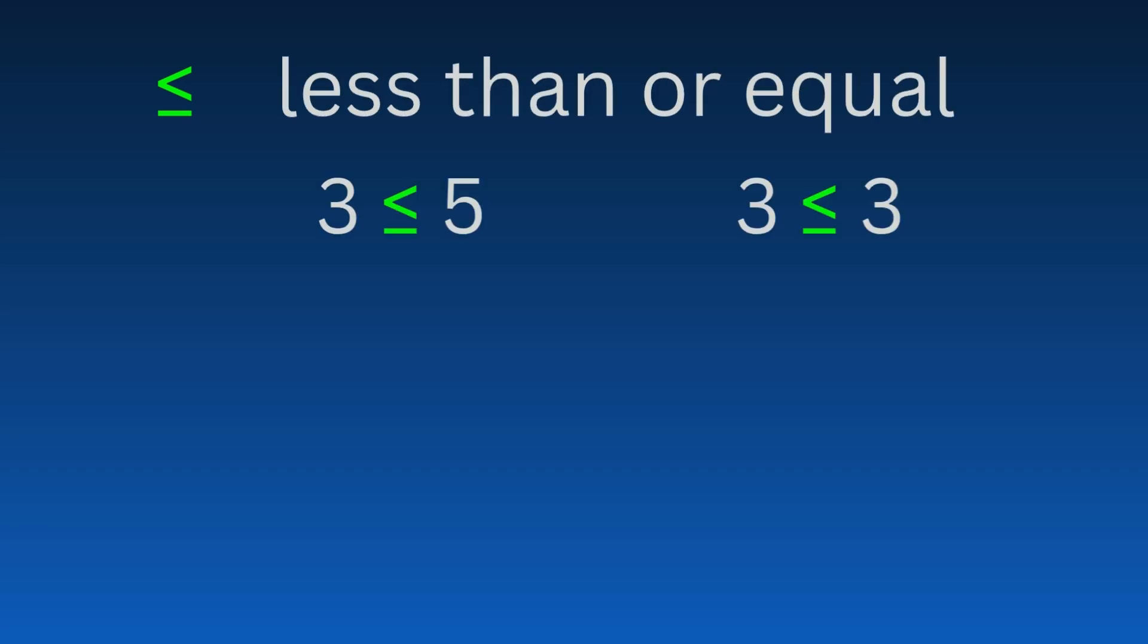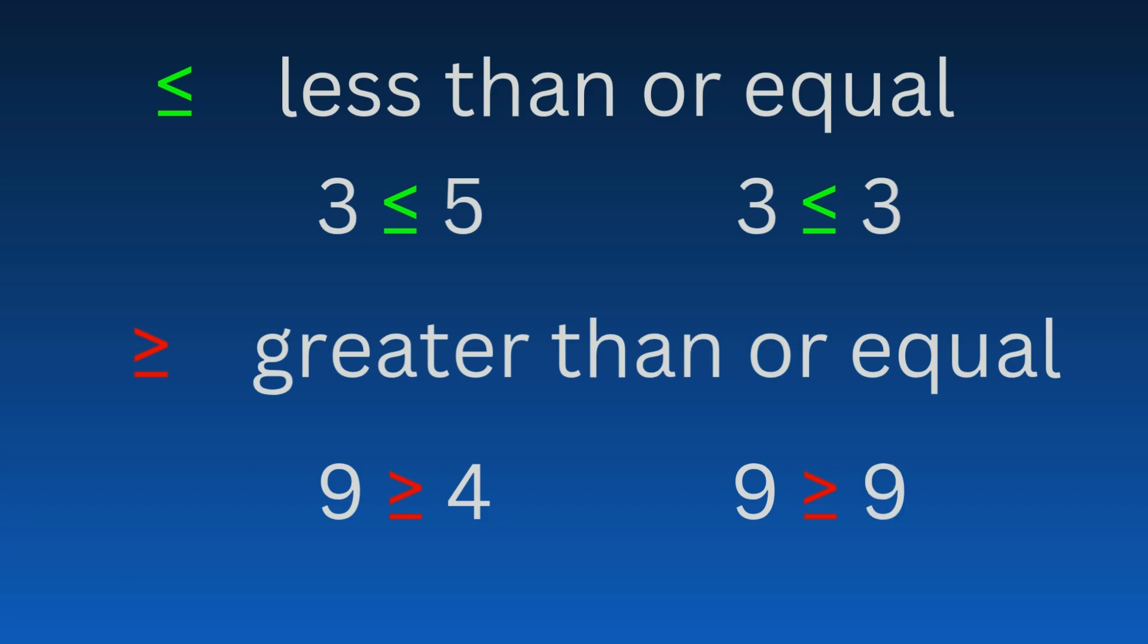The less than symbol is used to show that one value is smaller than another. Its opposite, the greater than symbol, shows that one value is larger than another. When you add a line to the less than symbol, it becomes the less than or equal to sign, meaning the value is either smaller or equal. The greater than or equal to sign works the same way, just in the opposite direction.